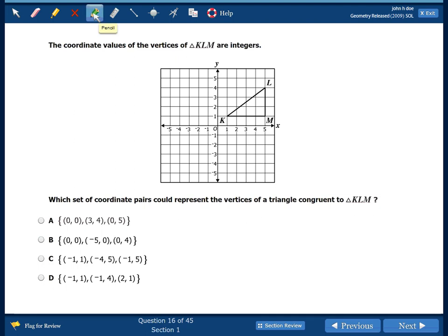So let's remember those strategies we talked about from the last video. We want to find the keyword. Remember, that's which, what, select, find. Our keyword here is which set of coordinate pairs could represent the vertices of a triangle congruent to triangle KLM.